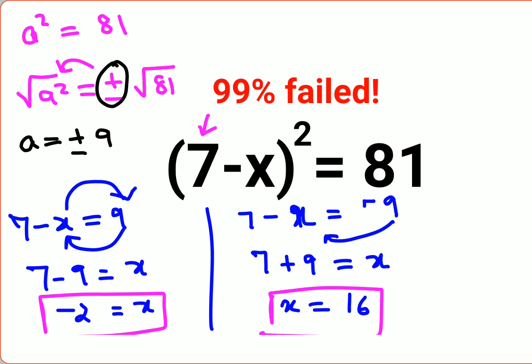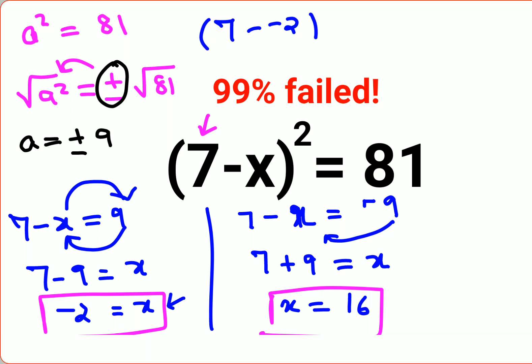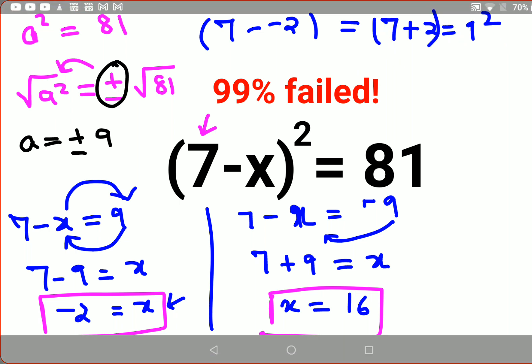Let's put it over here. So we will say 7 minus of minus 2. Instead of x we'll put this value and we get minus minus 2 become 7 plus 2, that becomes 9 square. Everywhere we were supposed to do the square, so basically that is nothing but 81, correct.